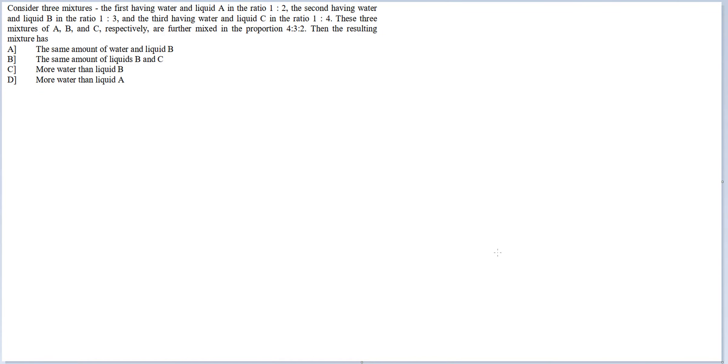Let's look at this question. Consider three mixtures: the first having water and liquid A in the ratio 1 is to 2, the second having water and liquid B in the ratio 1 is to 3, and the third having water and liquid C in the ratio 1 is to 4. These three mixtures of A, B, C respectively are further mixed in proportion of 4 is to 3 is to 2, then the resulting mixture has...